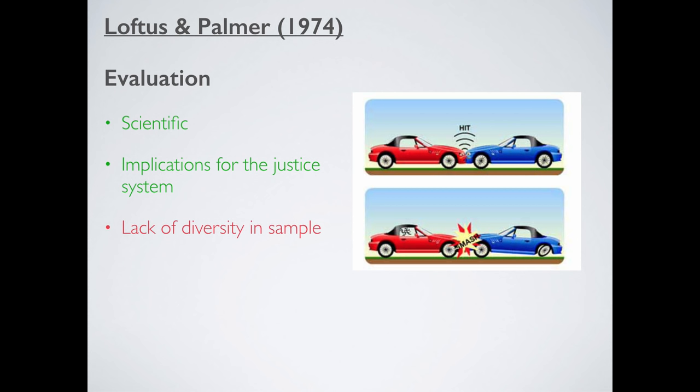Negatives, however, lack of diversity in the sample. All of these people are university students after all. Some of them might not have learned to drive yet. So maybe they just simply don't know what a car looks like when it's going 30 miles an hour or 40 miles an hour. As well as that, reasonably small sample in the first one. So maybe we can put a question mark next to this.